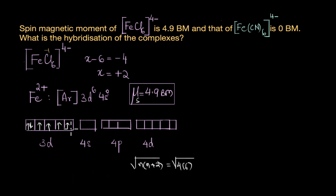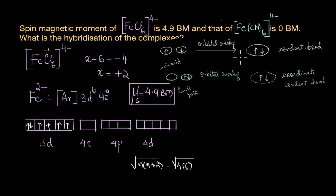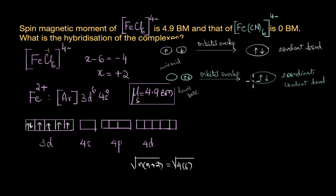Since pairing does not occur, for a coordinate covalent bond to form the central metal ion must have empty orbitals, onto which the ligands donate their electrons. This differs from a typical covalent bond, where atomic orbitals containing unpaired electrons overlap with equal contribution from both sides. In coordinate covalent bonding, it is the ligands that donate a pair of electrons to the empty orbitals of the metal ion. This is why the metal ion is called a Lewis acid and the ligands are called Lewis bases.